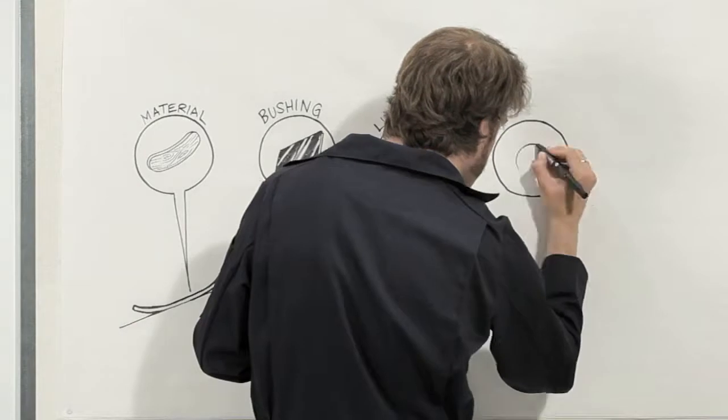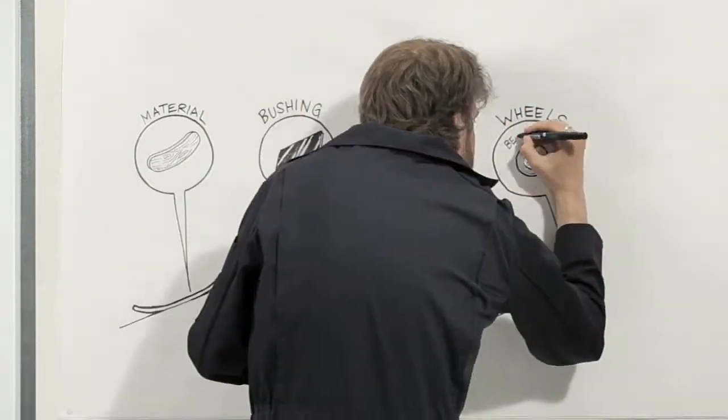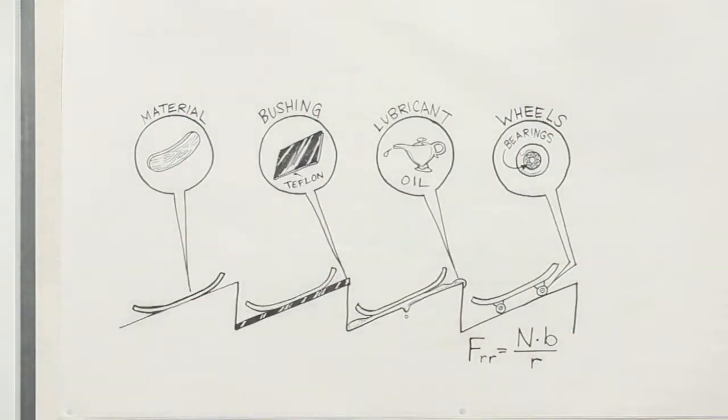You can also change sliding friction to much smaller rolling resistance using bearings or wheels like you'd find on skateboards.